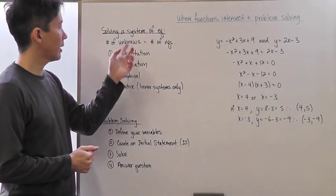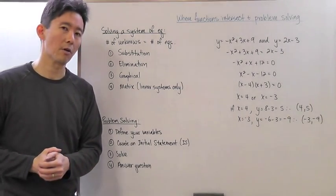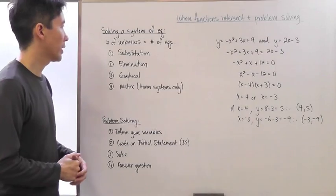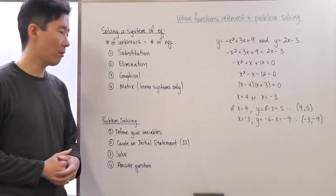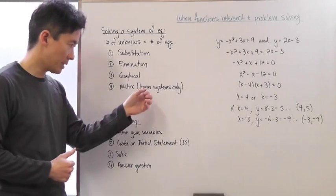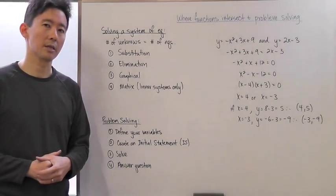Let's assume we have the number of unknown variables equal to the number of equations. We can use the substitution method, elimination method, graphical method, or the matrix method. But these are only useful if the system is linear.